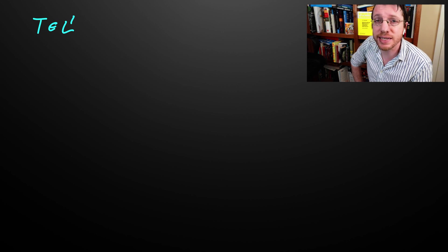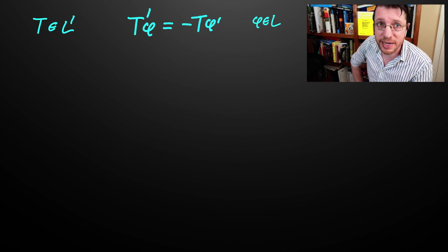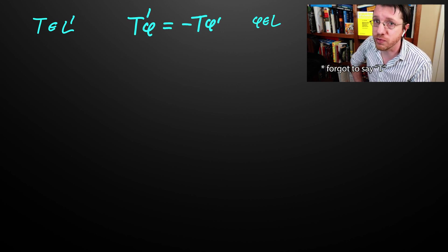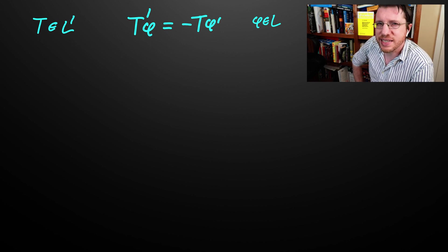Now we can extend our definition of the derivative by analogy with regular distributions. Hence we say for such a distribution t, the derivative of t is given as t prime of phi is equal to minus t of phi prime for all phi in L. So now let's see this definition in action.